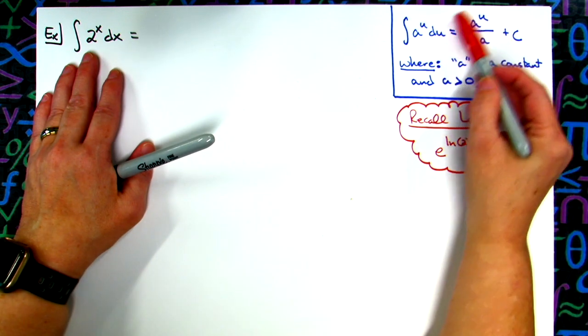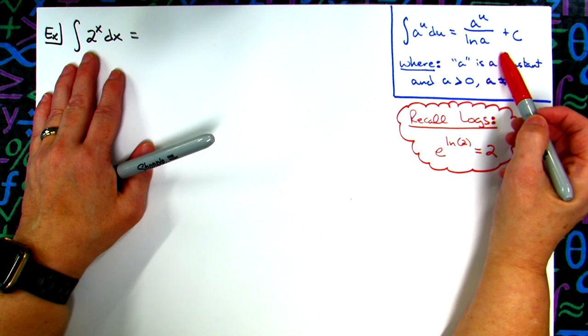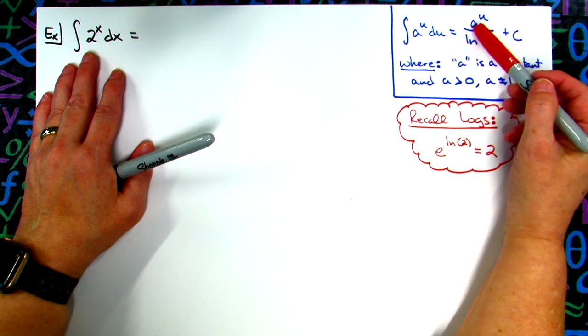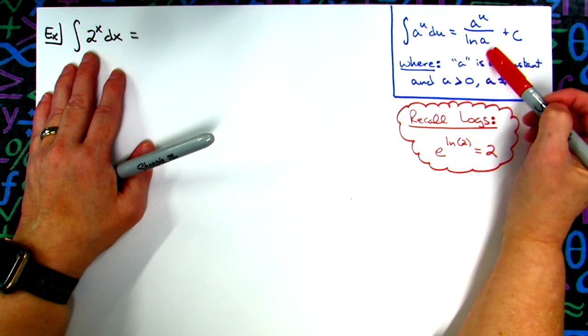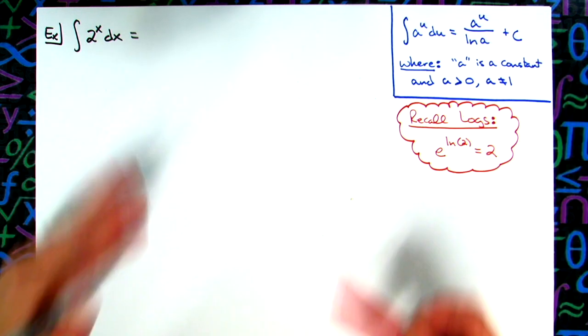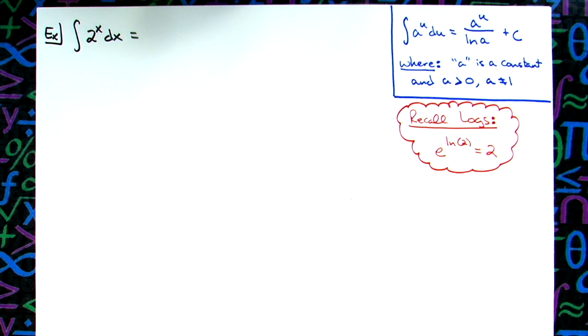Which then, if you have the formula memorized, then we just know that this is going to be 2 to the x all over natural log of 2 and then plus C. So memorizing that formula, yes, does get you this type of integral quicker.